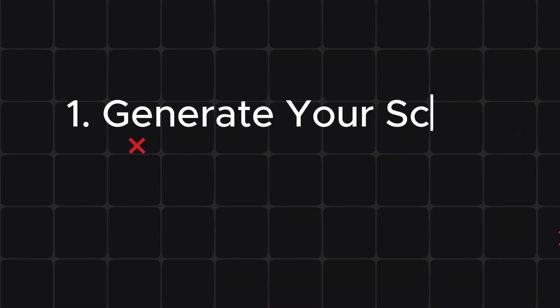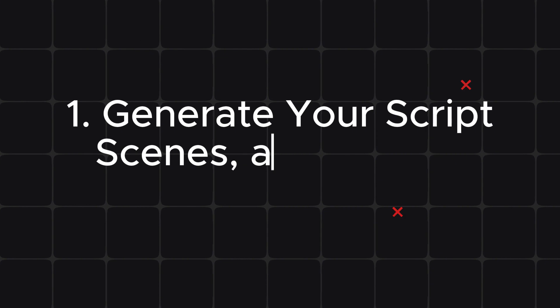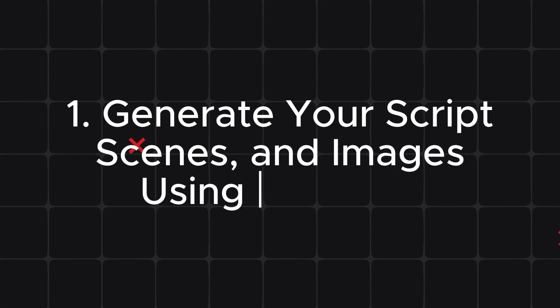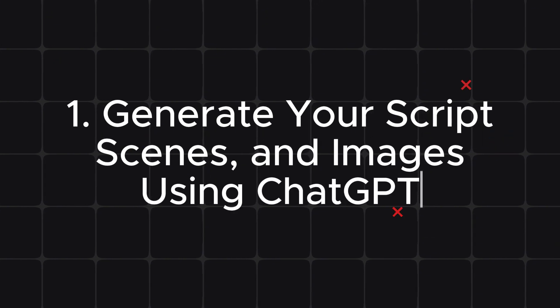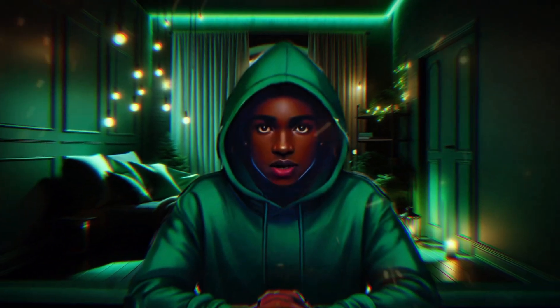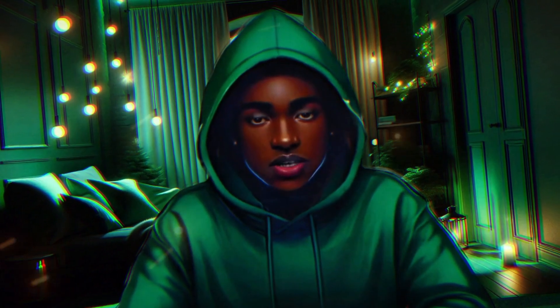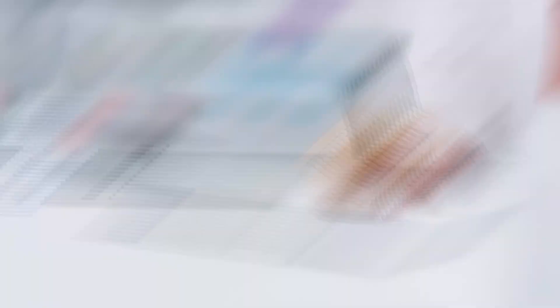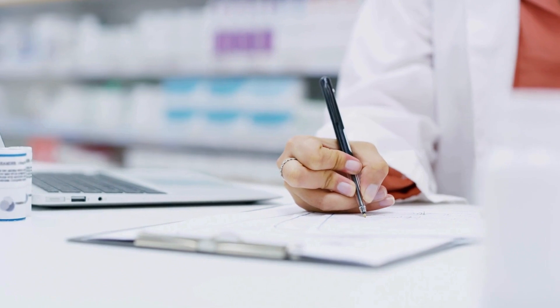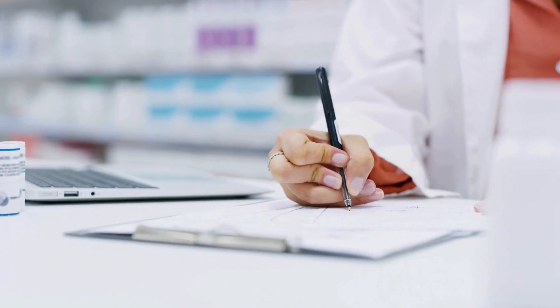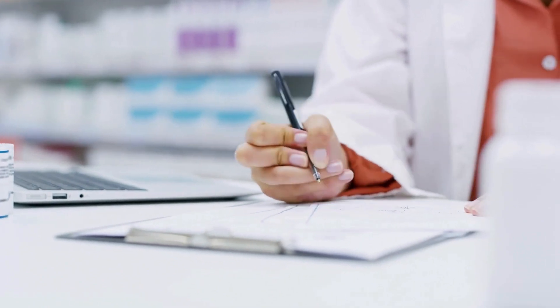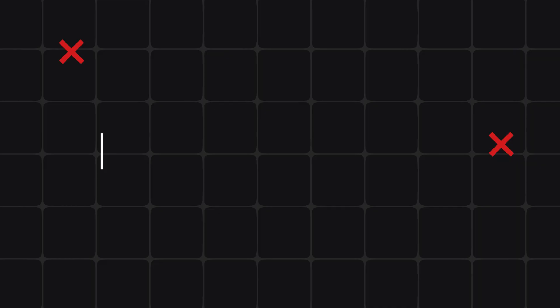Step 1: Generate your script, scenes, and images using ChatGPT. The first step in creating an amazing animation video is to develop a strong script and visuals. Here's how to do it using ChatGPT.